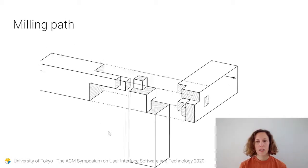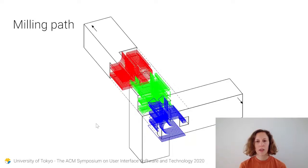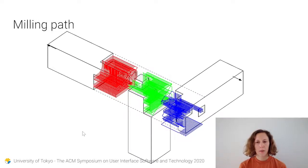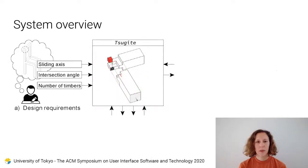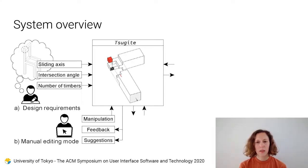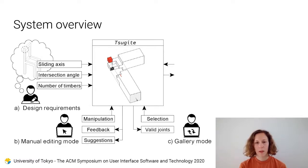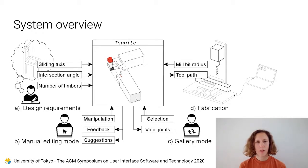Finally, when a design is finished, you can press a button to instantly generate a toolpath for fabrication with the CNC milling machine. In summary, the user sets certain design requirements, including sliding axes and the angle of intersection. Then the user edits the joint manually by pushing and pulling on the faces while receiving real-time feedback and suggestions. Or alternatively, the user selects the joint in the gallery mode. Finally, the joint is exported for fabrication.